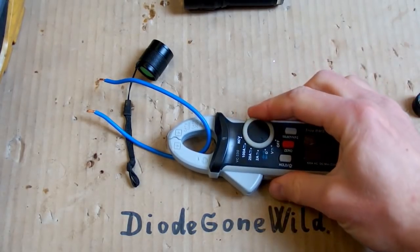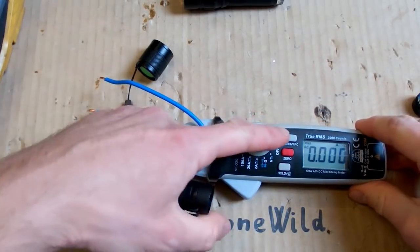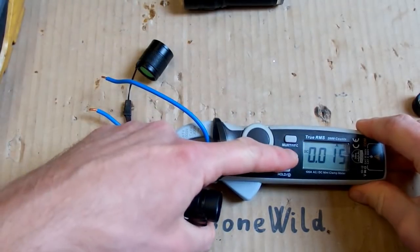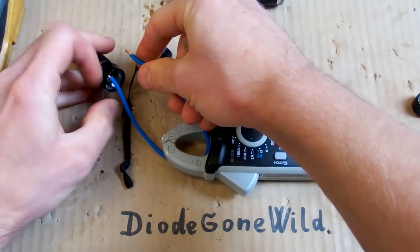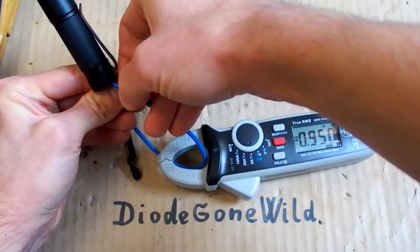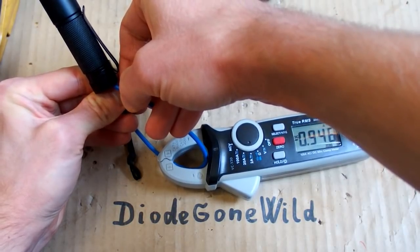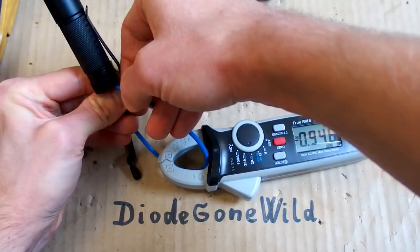Let's set my clamp meter to 2A DC. It has to be DC. Zero it out. And let's try to measure it. 0.95 amps, almost 1 amp. That's quite a lot.